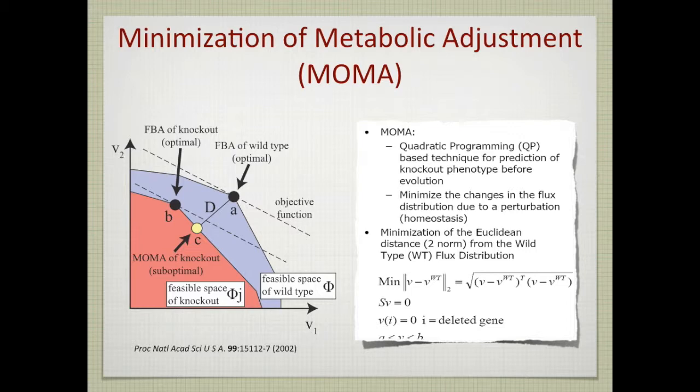And the nice thing about MOMA is that the yellow dot is unique. When you fix the point you're projecting, it's an orthogonal projection onto the solution space, and it's the shortest distance. It is a unique prediction, which is nice.